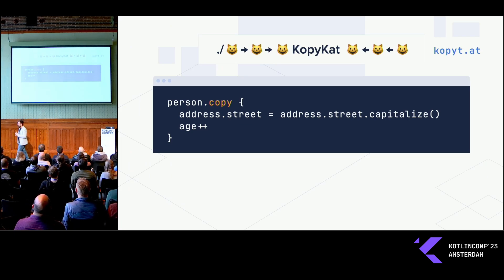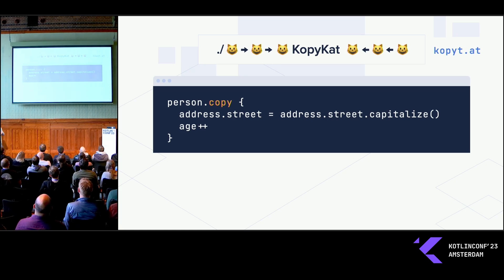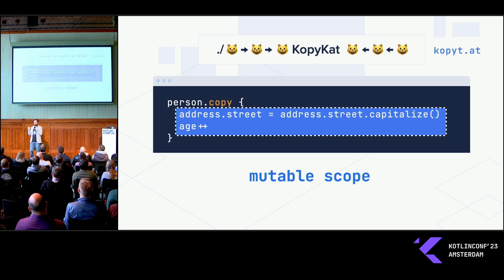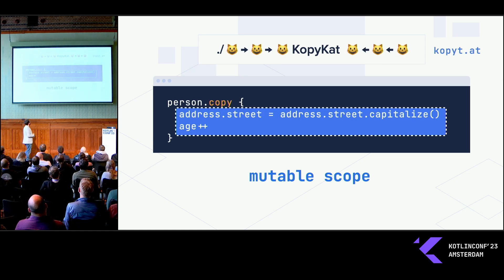Let me start with copycat. Copycat is a small compiler plugin which creates its own version of copy. Within this copy, it's like you have a mutable scope where you can mutate — you can do as if your thing was mutable. You can just say age++. Age is now incremented, or you can change the street, so you don't really have to repeat all of this.